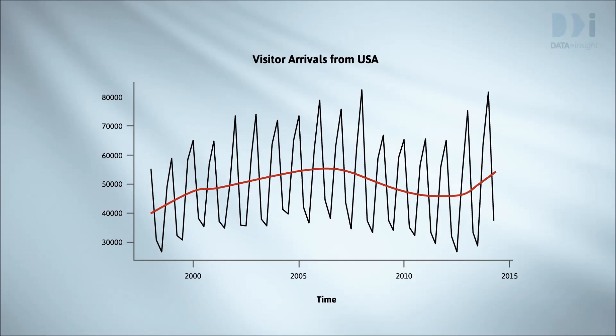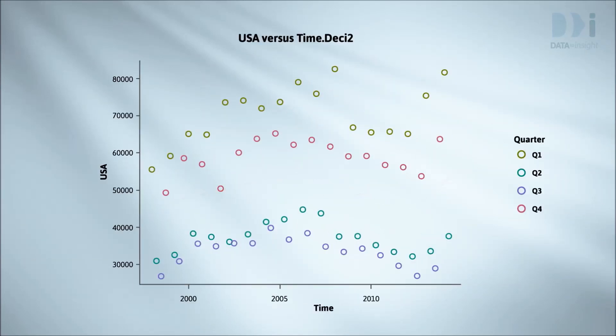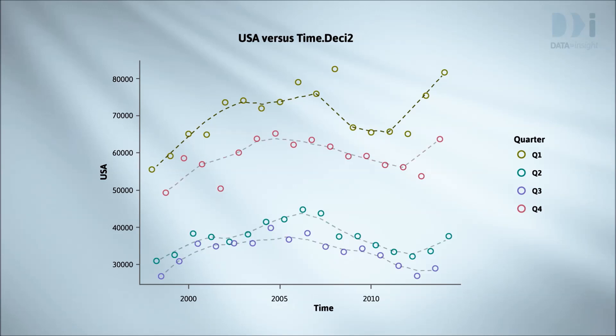There are various ways of getting the trend. This is just a smoother applied to the scatter plot. Or we could smooth the series for each quarter separately and then average the smooths.